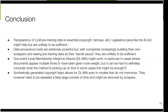As competition increases, data provenance tools are unlikely to be sufficient to truly understand what content a model learned from. Then we have a whole class of document-level membership inference attacks — an active field. They might work, particularly in cases like the New York Times lawsuit involving regurgitation, especially when documents appear multiple times or have been given more weight during training. But some results show it can be hard to definitively conclude what the method is exactly picking up on.